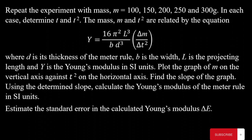We are given a formula connecting mass and T squared: Y = 16π²L³ / (bd³) × (Δm / ΔT²), where d is the thickness, b is the breadth, L is the projecting length, and Y is Young's modulus in SI units. We are to plot a graph of mass M on the vertical axis against T squared on the horizontal axis, find the slope, and use it to obtain Young's modulus.